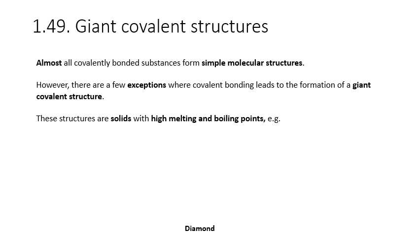Most covalent substances form simple molecular structures, but there are some key exceptions that form what is called a giant covalent structure instead. These structures are solids at room temperature and have high melting and boiling points. An example is diamond, which consists of carbon atoms covalently bonded to four other carbon atoms in a tetrahedral structure, and each of those carbon atoms is bonded to four others. This leads to the formation of a very large molecule — so large you can see it with the naked eye. A diamond on a ring is actually a single molecule. There are no intermolecular forces here, so melting diamond requires breaking all of those covalent bonds.